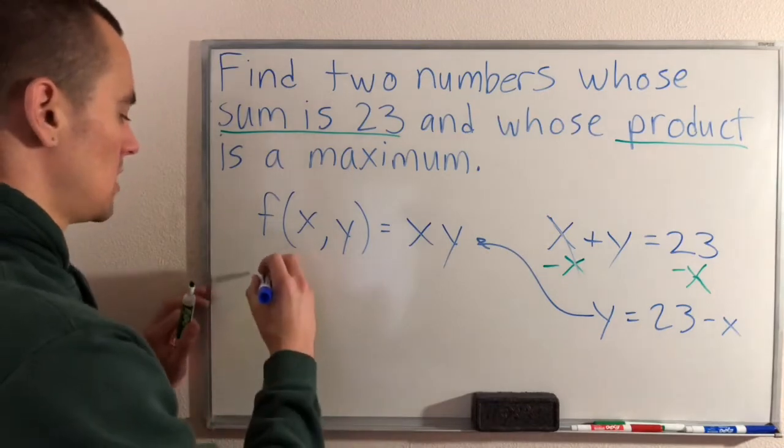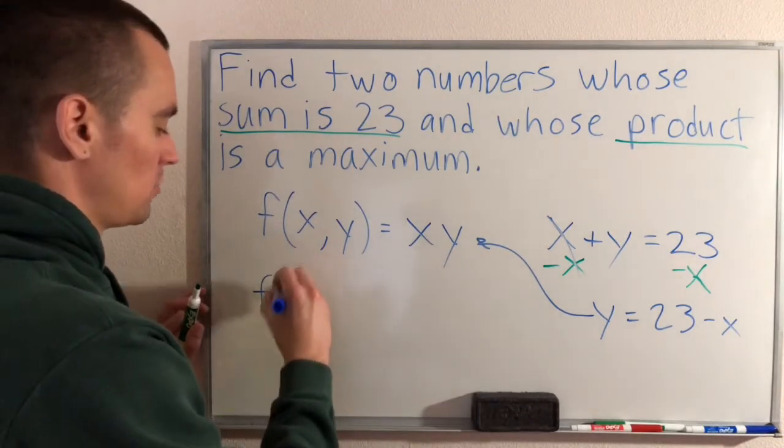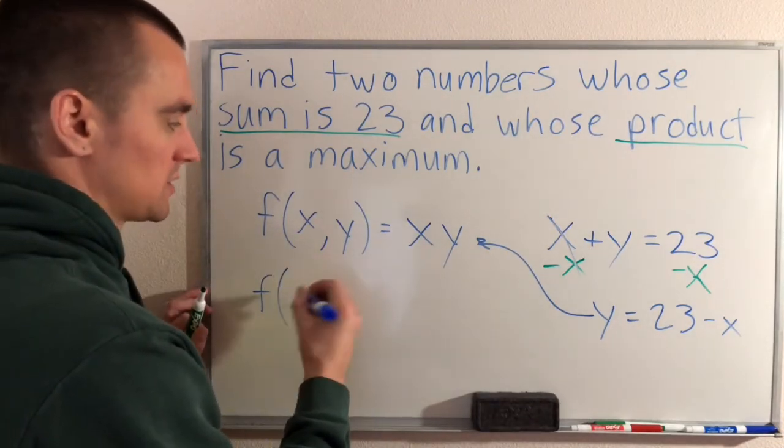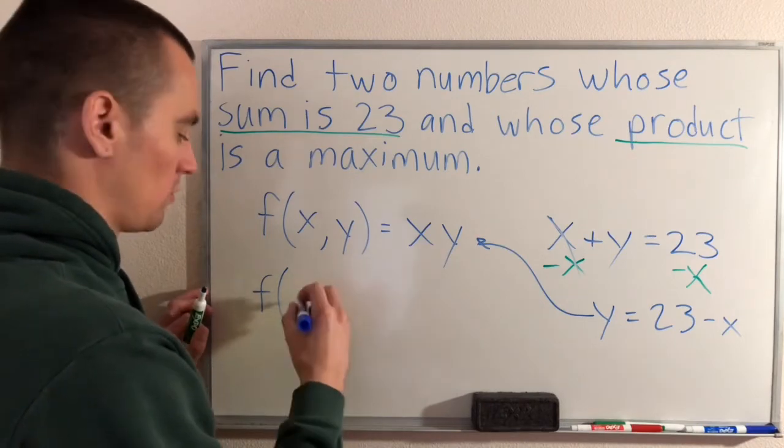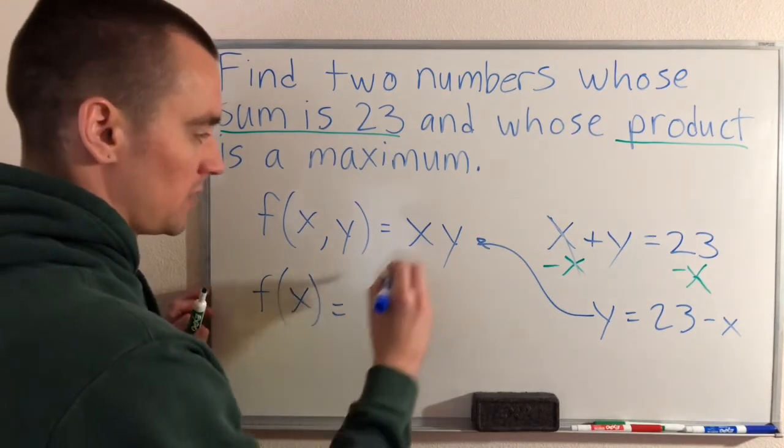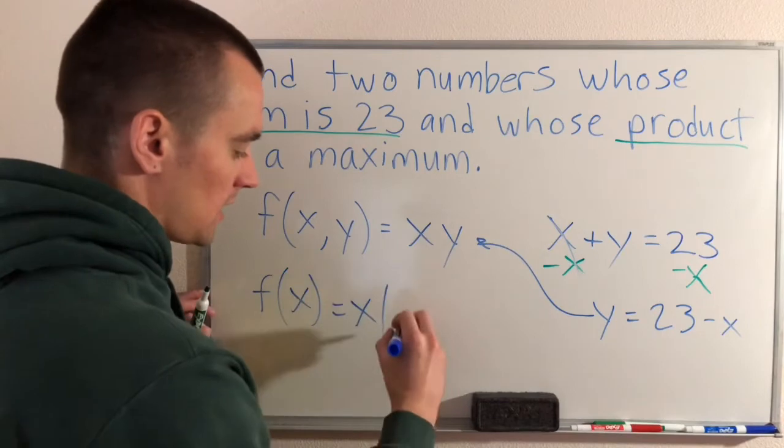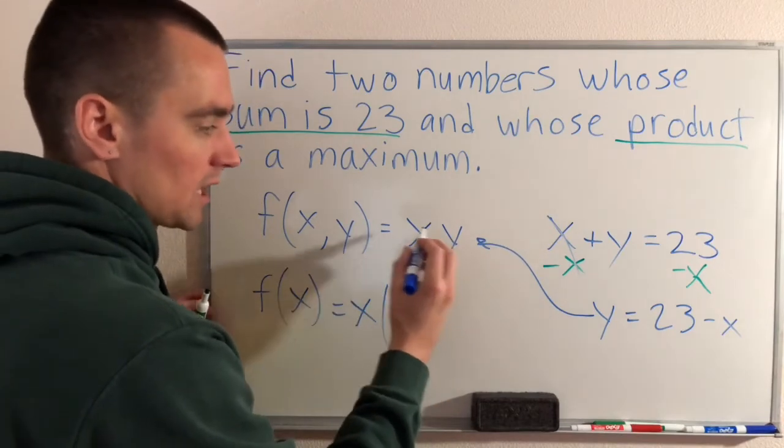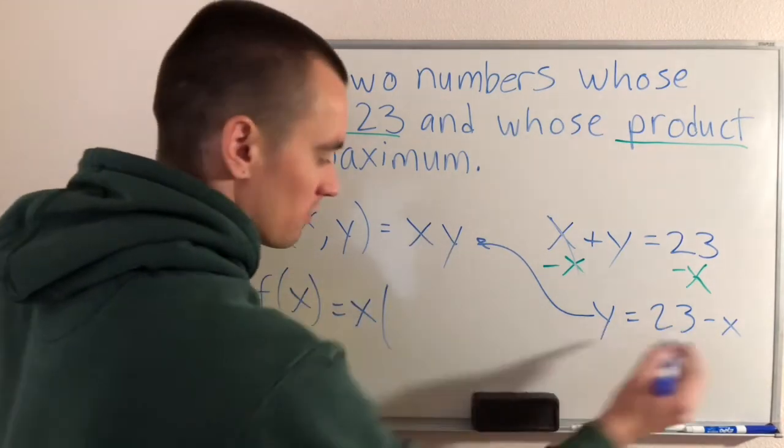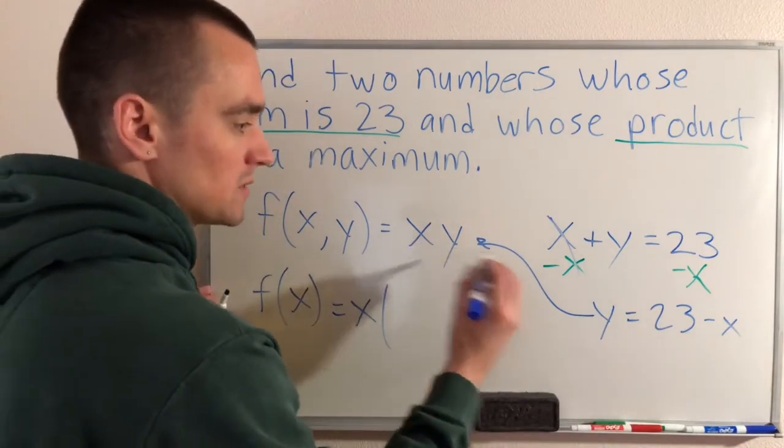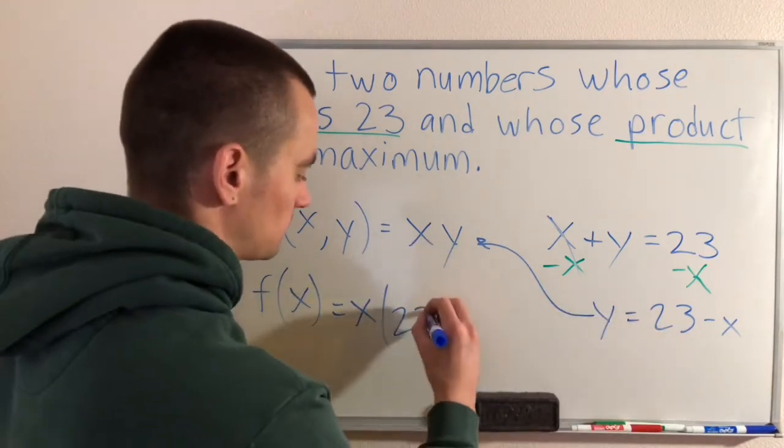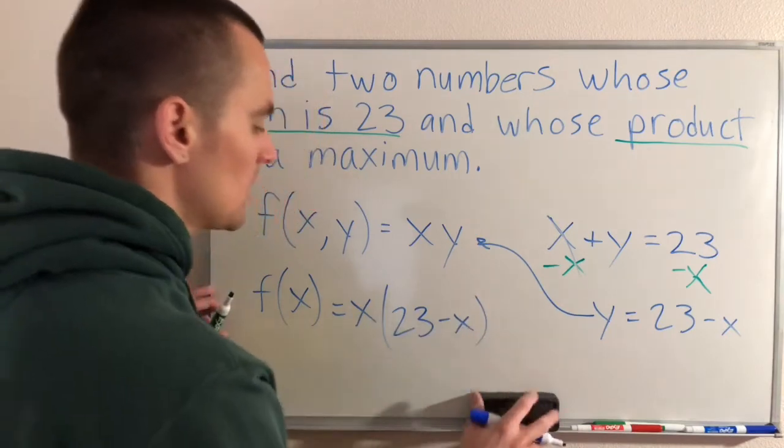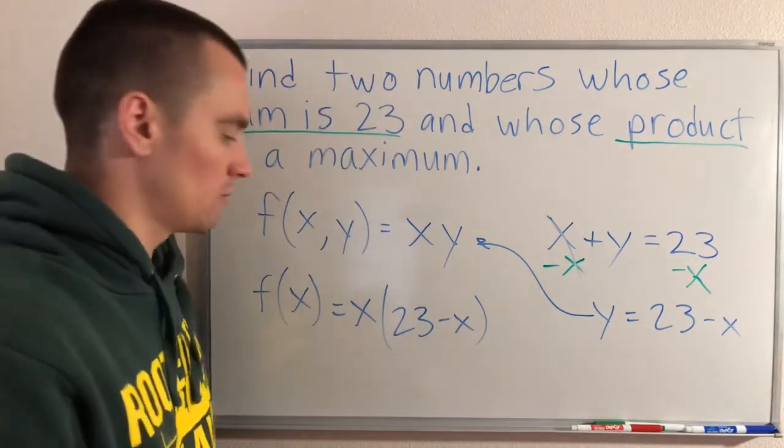So doing that will give us some new function which is just basically the single variable version of this, which will be X times, instead of having X times Y, we now know Y is 23 minus X. So we can do X times 23 minus X. Now doing that we could simplify this by distributing our X into our parentheses, which just gives us 23X minus X squared.